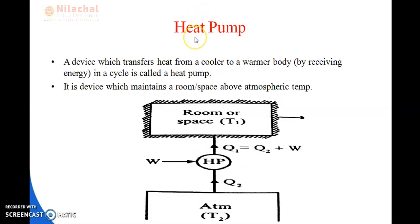The first device following the Clausius statement is the heat pump. A device which transfers heat from a cooler body to a warmer body in a cycle is called a heat pump. Generally, you use the heat pump in winter. In winter, the surrounding temperature may be 10 degrees Celsius or minus 10 degrees Celsius, but the human body's comfortable temperature is 26 degrees Celsius. The heat pump maintains the room above the atmospheric temperature to provide comfort.